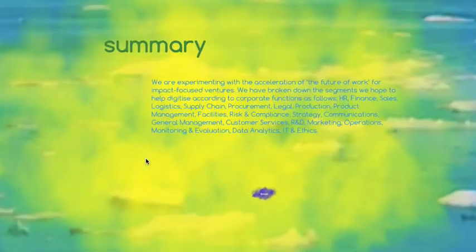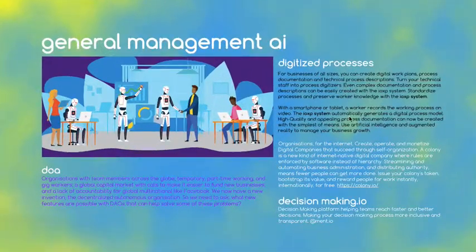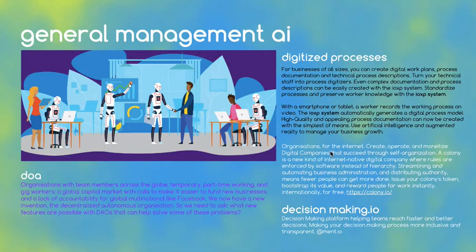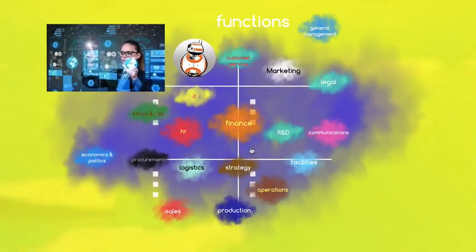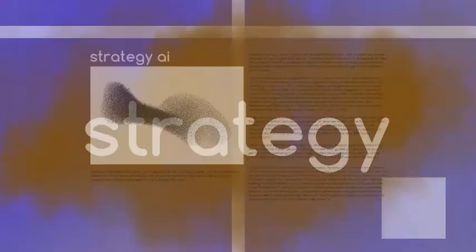You can come to Core Functions. Here you are able to choose what function you want to amend — like general management. You can digitize any process you want; there are tools for that. You can do strategy — we have IdeaFlow here, a platform that will help you to do strategy.